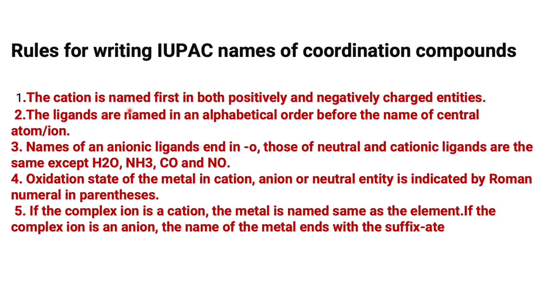As per the rule, the cation is named first. After naming the cation, the ligands are named in alphabetical order before the name of the central atom or ion. Names of anionic ligands end in -o, but those of neutral and cationic ligands are the same, except H2O, NH3, CO, and NO.